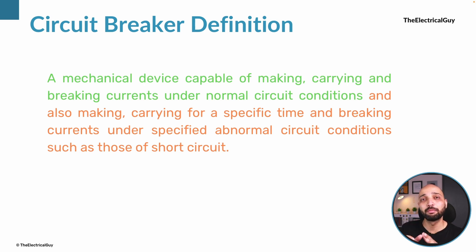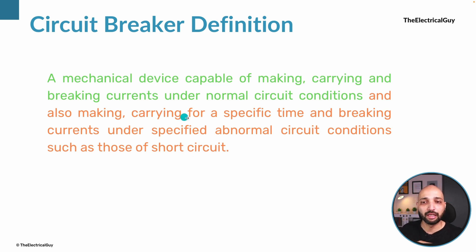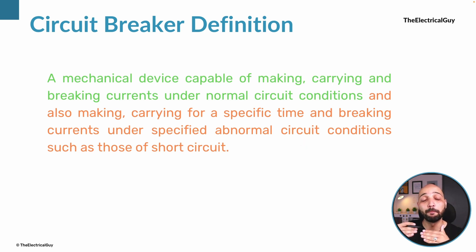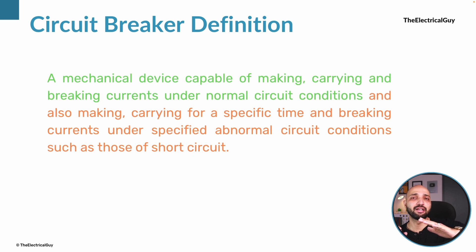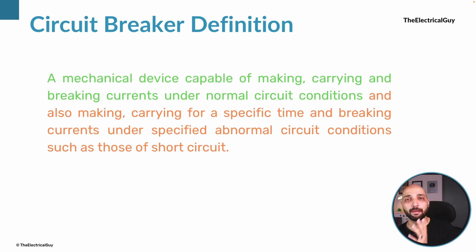That means the breaker is capable of carrying 40 kilo ampere of short circuit current for three seconds — that is what we mean by 'carrying for a specific time.' The breaker is also capable of breaking that huge short circuit current, which can go up to 40, 50, or even 63 kilo ampere based on the system fault rating and the voltage rating. So by splitting the definition into two portions — normal conditions and abnormal conditions — you can understand it easily.